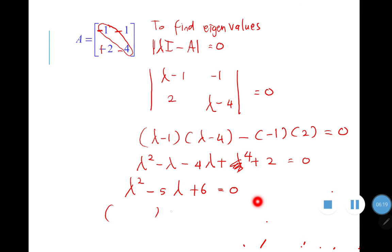So when you factor that you will get lambda minus three and lambda minus two. So lambda the first lambda is three and the second lambda is two. So that's it. Now you know how to find the eigenvalues.